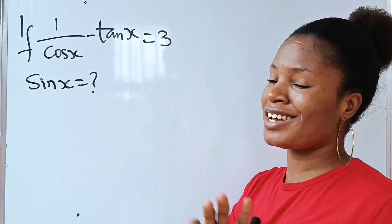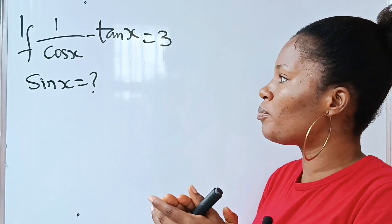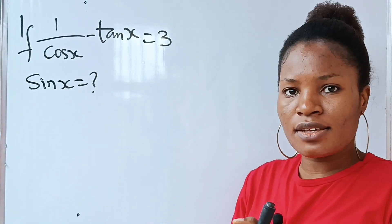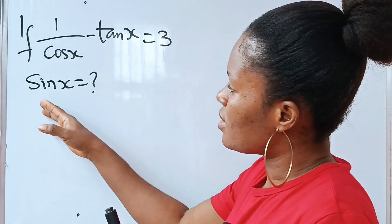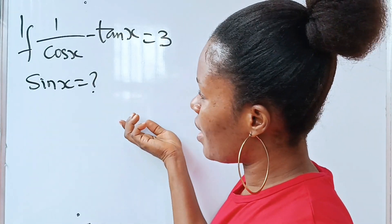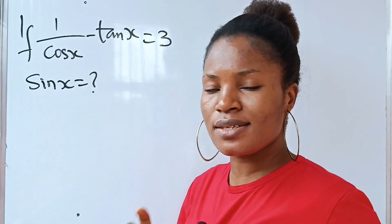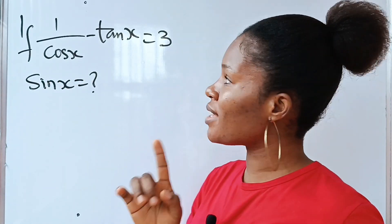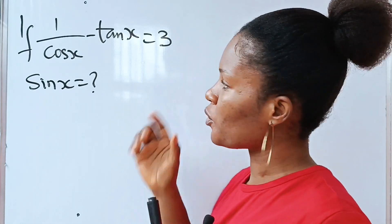Hi, this is a challenging math olympiad question, but let's do this. We are asked to solve for sine x if 1 over cos x minus tan x is equal to 3.